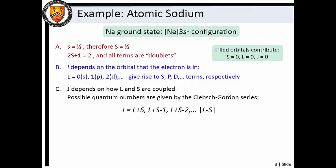To determine the range of possible J values, we employ a Clebsch-Gordon series. This series has limits of the sum of L and S and the absolute value of their difference, and it contains integer steps between these limits. In our example, we have an upper limit of 1 half and a lower limit of 1 half. In other words, only J equals 1 half is possible. Thus, we find atomic sodium has a doublet S 1 half ground state term symbol.